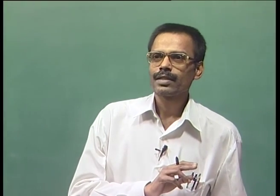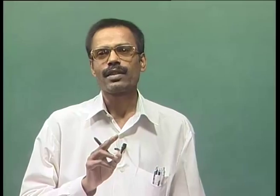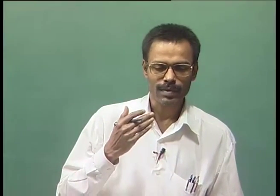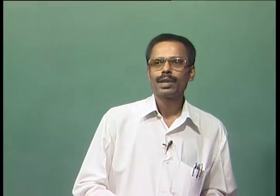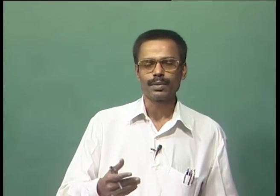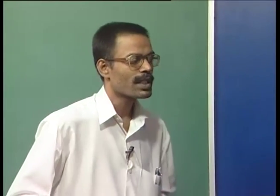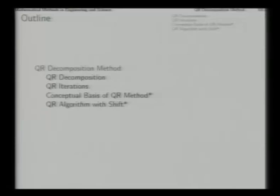In the previous two lectures we considered two ways of finding suitable similarity transformations for solving the algebraic eigenvalue problem. In this lecture we will briefly discuss the other two. The first that we discuss now is the method based on matrix decomposition or factorization. The most important matrix decomposition for eigenvalue problems is the QR decomposition.